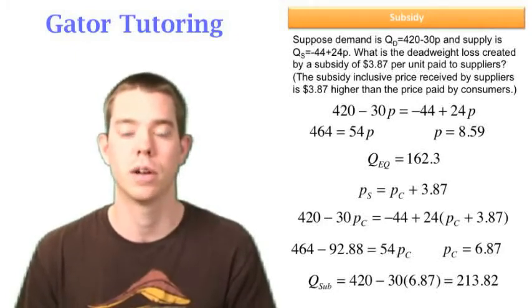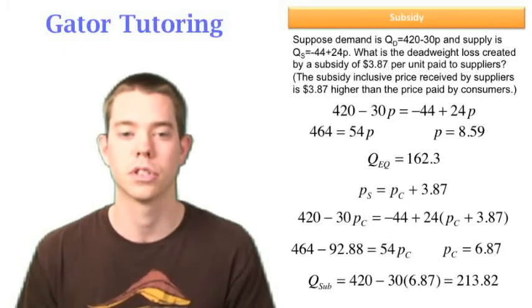So just be careful. We didn't have to do that. That's an extra step, but know that you could also do it that way. In this case, I just solved for PC and I plugged PC into quantity demanded to get my quantity with the subsidy.